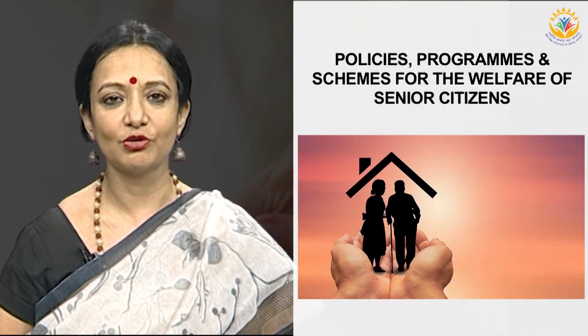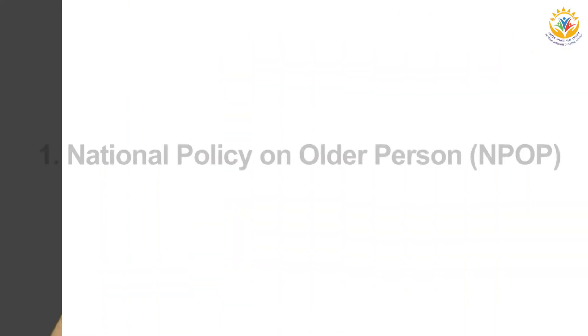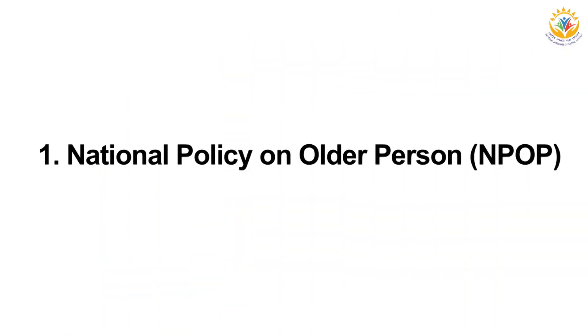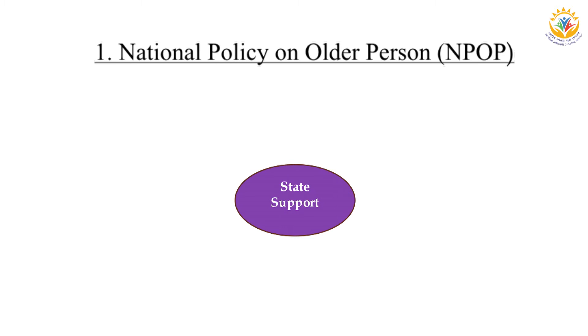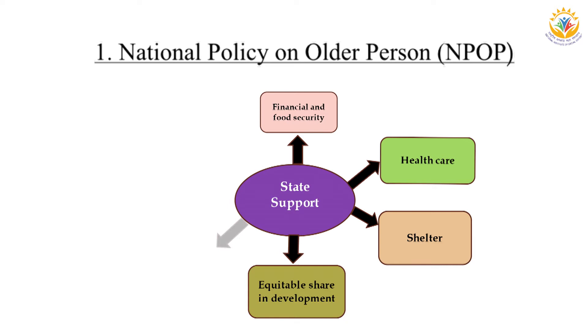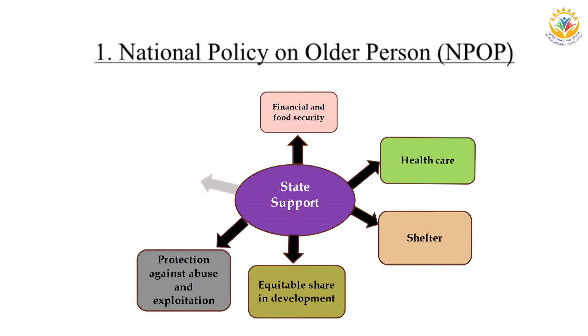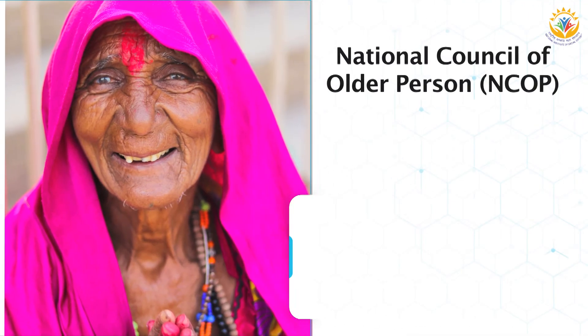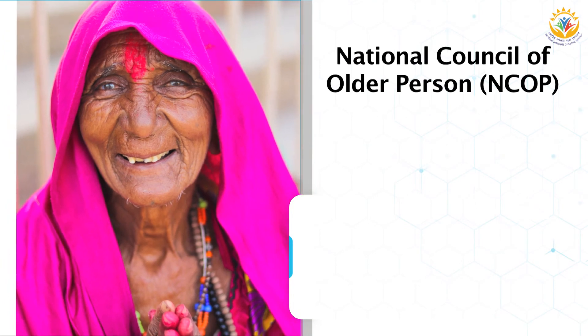Next, let us talk about policies, programs, and schemes for the welfare of senior citizens. The first is the National Policy on Older Persons, announced in 1999, to reaffirm commitment to ensuring the well-being of older persons. The policy envisages state support to ensure financial and food security, healthcare, shelter, and other needs of older persons, equitable share in development, protection against abuse and exploitation, and availability of services to improve quality of life.